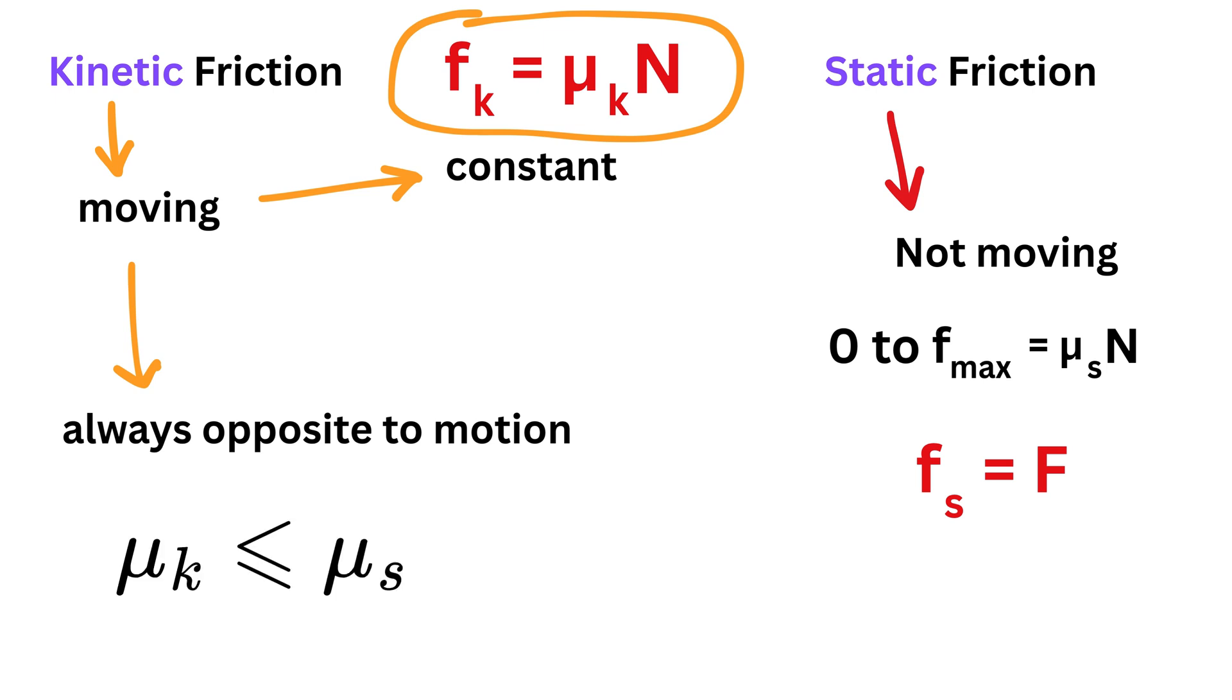Usually, mu_k is smaller than mu_s, which is why it is easier to keep an object moving than to start it moving.